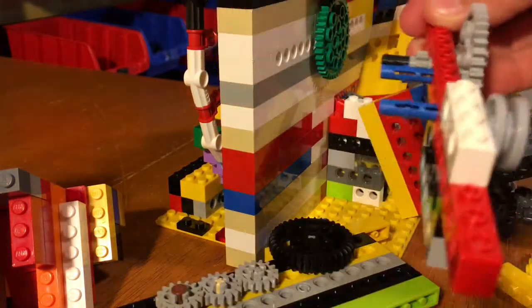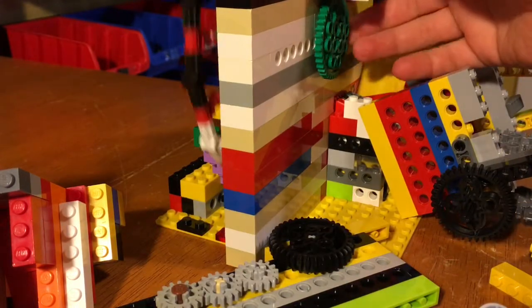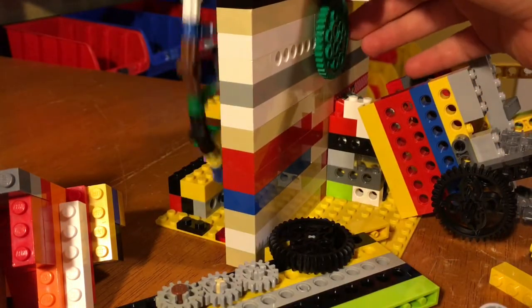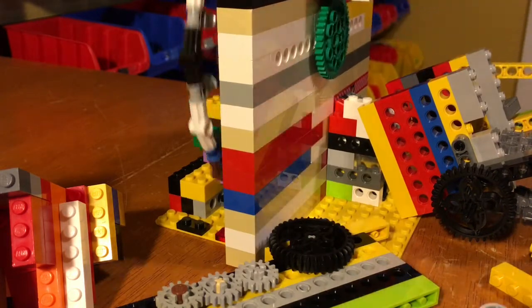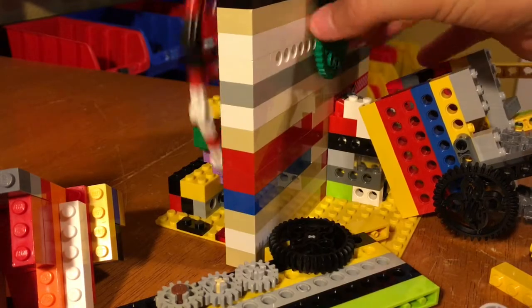You can see this, it makes another gear reduction for the spinning disc. Basically that's all there is for this one. This is probably the most gearing I've ever used in something this simple.